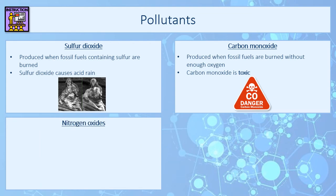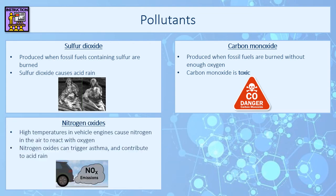The third pollutant is nitrogen oxides — a generic term for any compound that contains nitrogen and oxygen. This isn't coming from the fuel itself but from the high temperatures inside the vehicle engine, which causes nitrogen and oxygen in the surrounding air to react with each other, forming these nitrogen oxides. The problem with these is that they can trigger asthma and other breathing problems, and they can also contribute to acid rain.